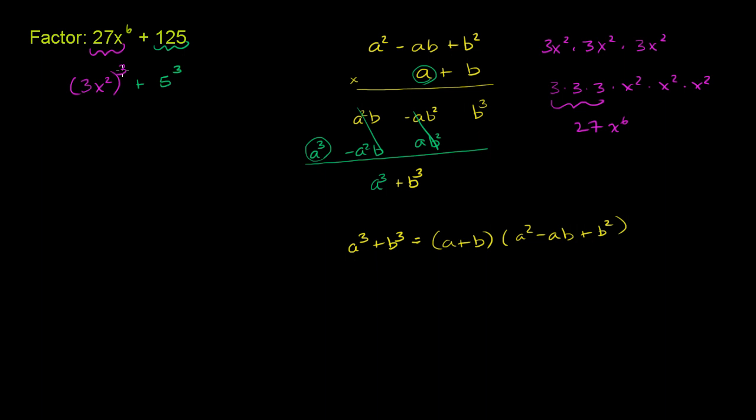Or you could just raise both of these to the third power. 3 to the third is 27. x squared to the third power. You take an exponent to an exponent and you're going to take the product of the exponents. So it'll be x to the 2 times 3 or x to the sixth power.